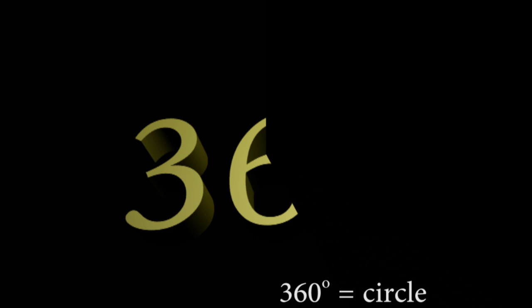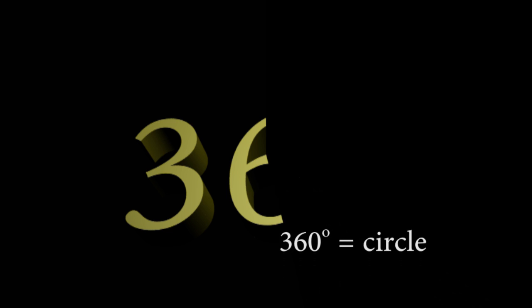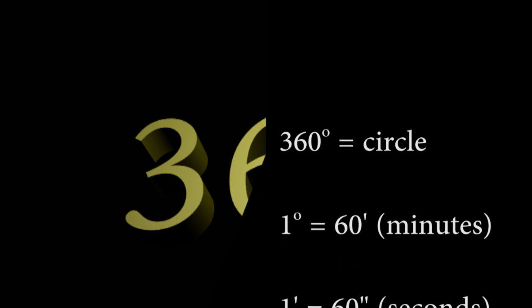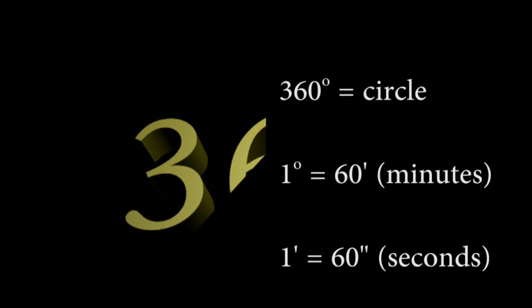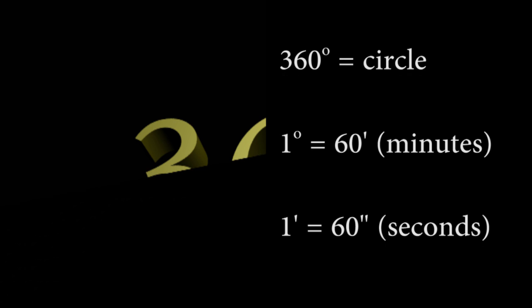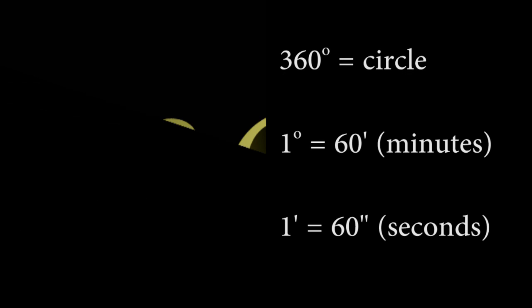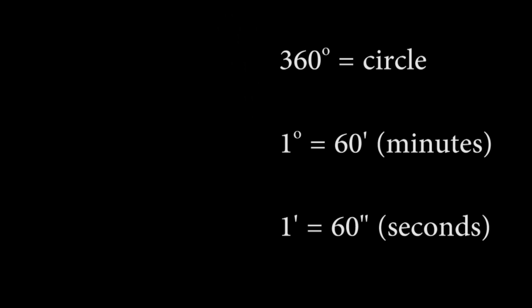Each degree of that circle is then broken down into 60ths of a degree, and each 60th of a degree is called a minute. Each minute of arc is broken down into 60ths of a minute, which we call a second of arc. So: 60 seconds in a minute, 60 minutes in a degree, and 360 degrees in a full circle.